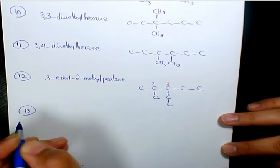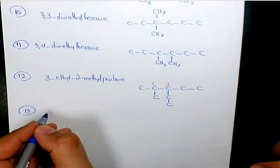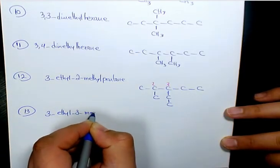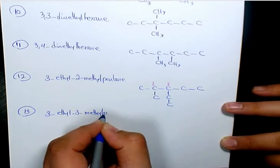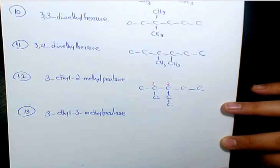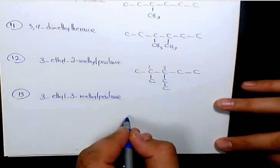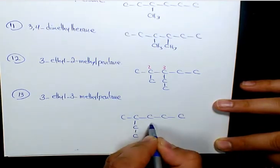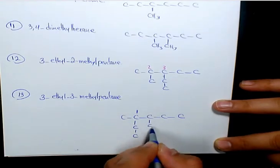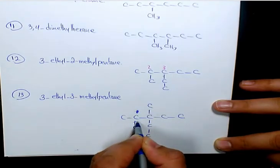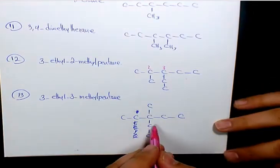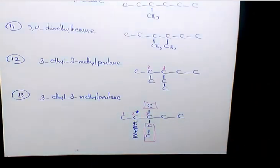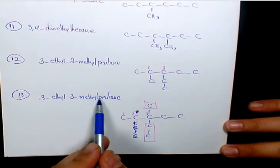Number thirteen is 3-ethyl-3-methylpentane. That means we have five carbon atoms on the main chain with both an ethyl group and a methyl group on the third carbon. That's why it's called 3-ethyl-3-methylpentane.